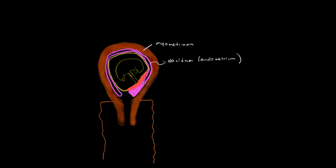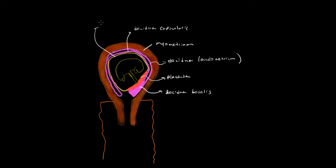Let's say the fetus implanted here, into the wall, into the endometrium, and taken with it a layer of decidua. This purple here will be the decidua following along the membranes — that'll be the decidua capsularis. This red structure represents the placenta, and underneath that is the decidua just where the implantation occurred — that'll be the decidua basalis or the basal decidua. The yellow circle represents the amniotic membranes or the fetal membranes.